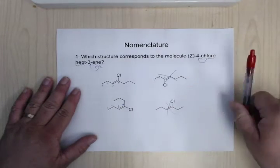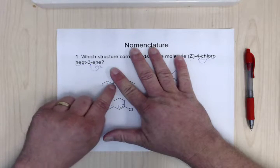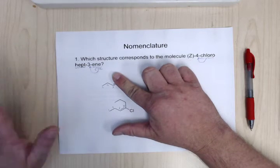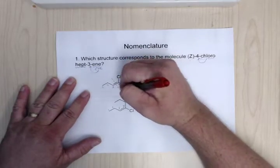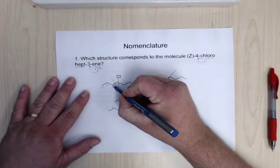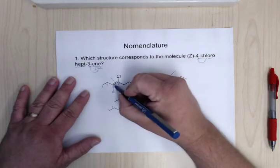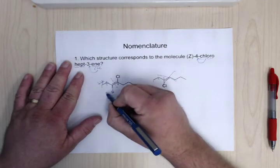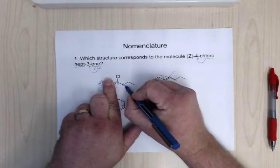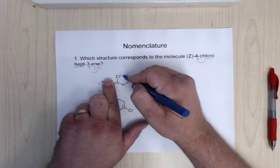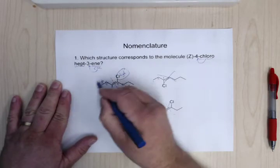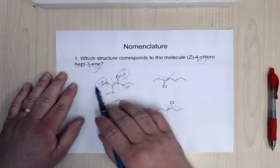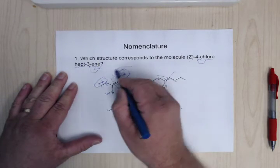For E and Z, look at the two groups hanging off each carbon of the double bond and determine which is higher and lower priority using the same rules as R and S. On one carbon, there are three bonds shown, so the fourth must be hydrogen — it's carbon versus hydrogen, carbon is heavier, so that's high versus low. On the other carbon, it's chlorine versus carbon — chlorine is heavier, so that's high. The high-priority groups are on the same side, so in a bad German accent — this is the Z.